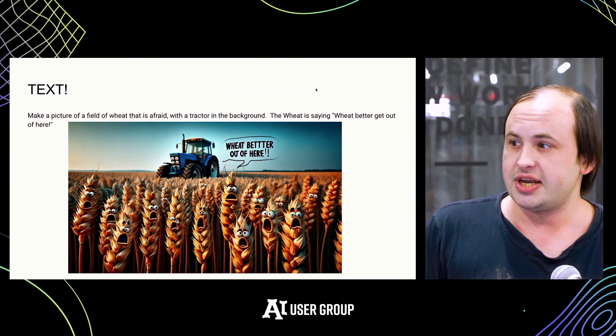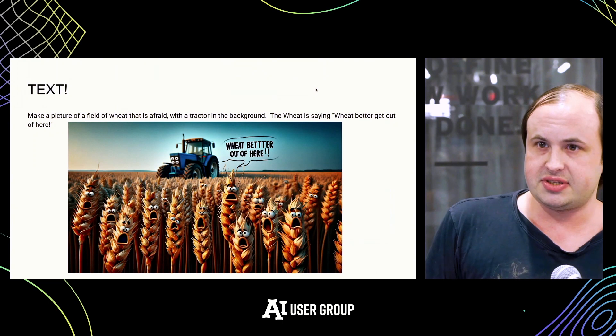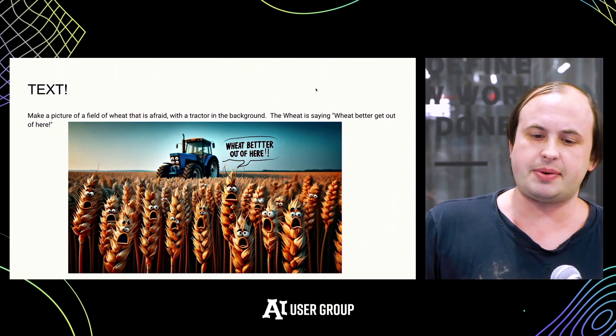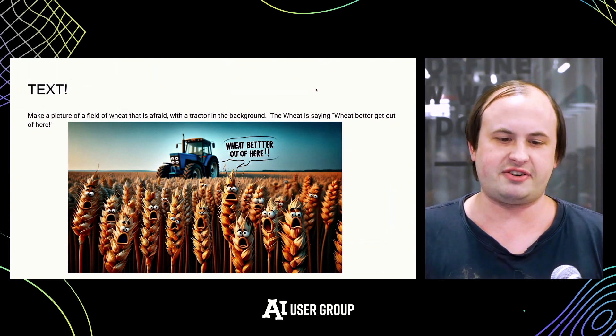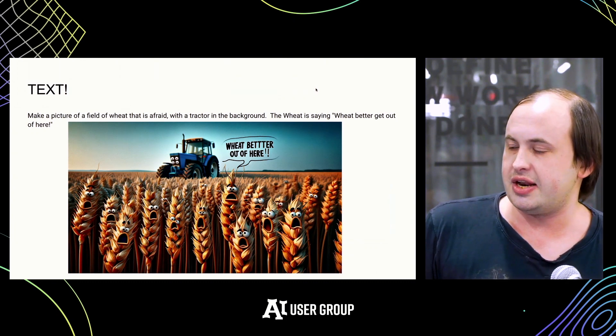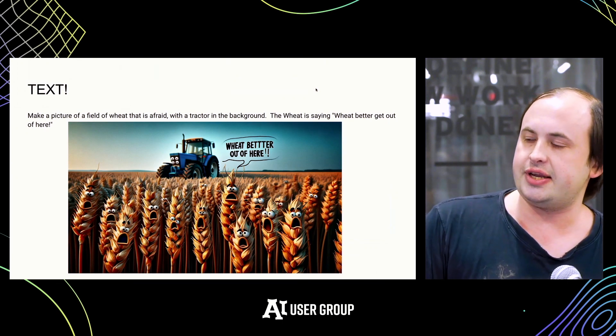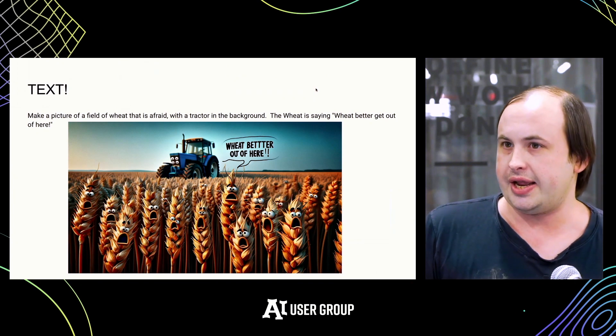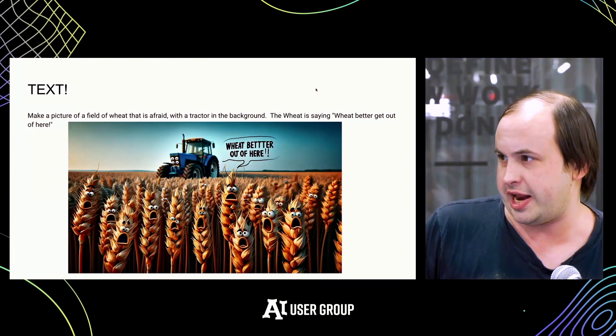Another cool thing about DALL-E 3 is its text generation — it's better at text than most image models. Here's an example: I asked it to make a picture of a field of wheat that is afraid, with a tractor in the background, where the wheat is saying 'wheat better get out of here.' The letters look cool, but the text works about 30% of the time as a rough estimate. That was the first picture it created, and if you generate it three or four times it usually gets the text right.